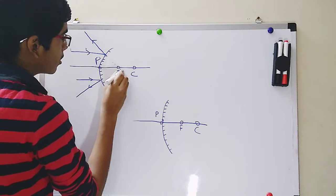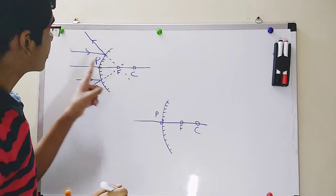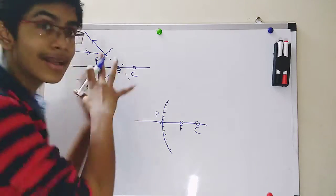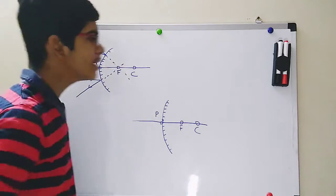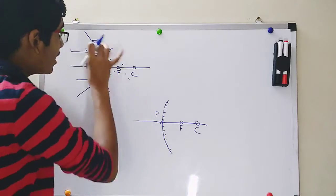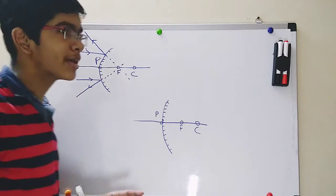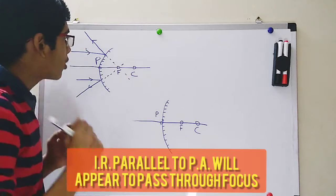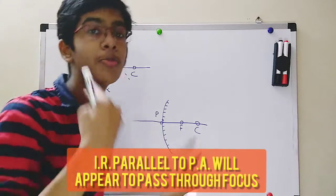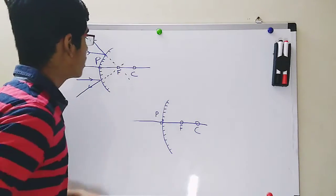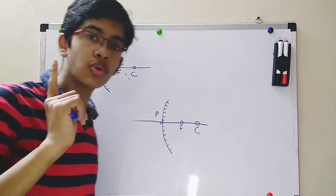If we extend the reflected rays backward, we can see that they virtually meet at the focus — they don't really meet, but they appear to meet when extended behind the mirror. So rule number one can be restated as: all the light rays parallel to the principal axis will appear to pass through the focus behind the mirror in the case of a convex mirror.